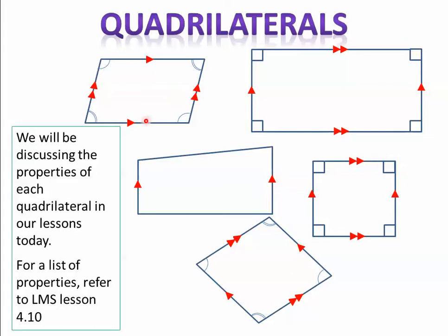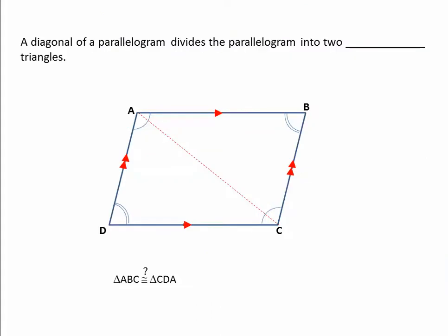Our lesson is going to focus on the parallelogram. If you remember, some of the properties of a parallelogram are that opposite angles are congruent, opposite sides are parallel and congruent — the arrows indicate they're parallel — and another thing we know about parallelograms is that their diagonals bisect each other. That's what we're going to be focusing on today by doing a proof and some examples.